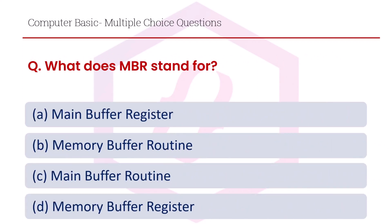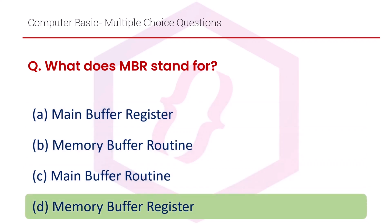What does MBR stand for? Option A main buffer register, option B memory buffer routine, option C main buffer routine, option D memory buffer register. The right answer is option D, memory buffer register.